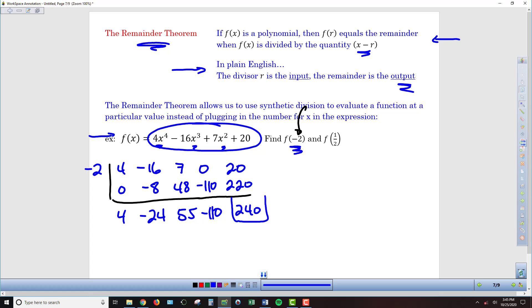So remember that last number is our remainder. And so what we have found is that when we plug negative 2 into this function, our output is 240.